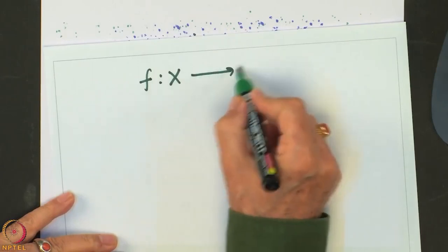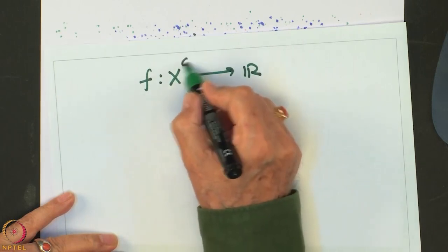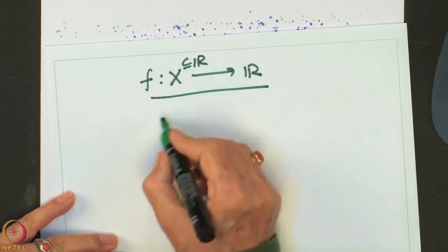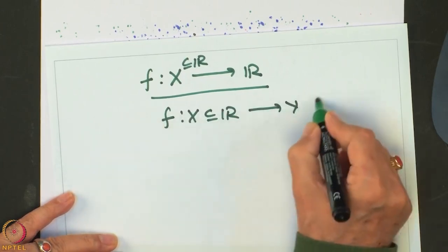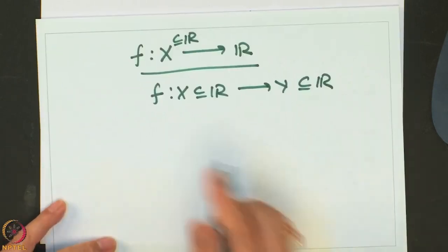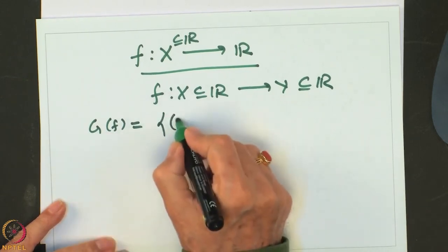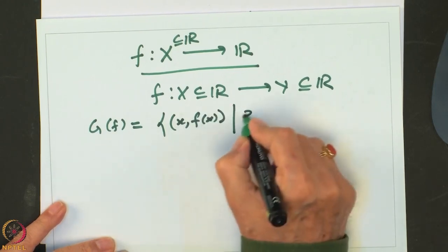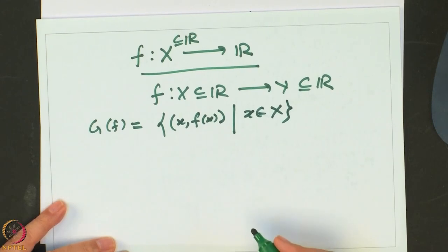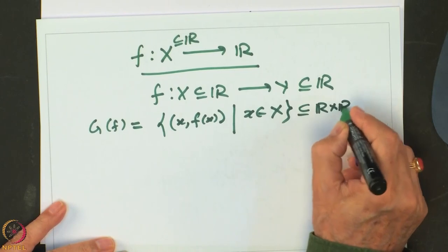F is a function from a set X, which is a subset of R, to a set Y, which is also a subset of R. The graph of F is nothing but the set of ordered pairs (X, F(X)) for X belonging to the domain X.